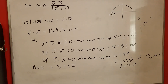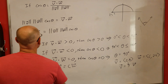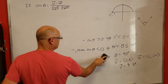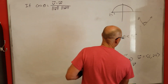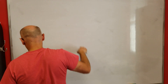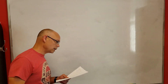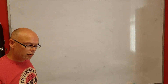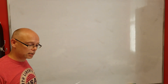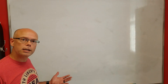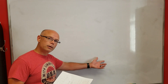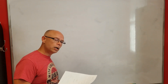Orthogonal means perpendicular. Two vectors V and W are orthogonal if and only if their dot product equals zero. To check if two vectors are orthogonal, take the dot product — if it equals zero, they are orthogonal; if it does not equal zero, they are not orthogonal.